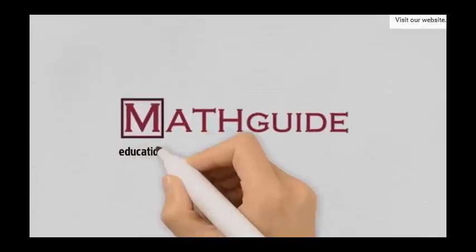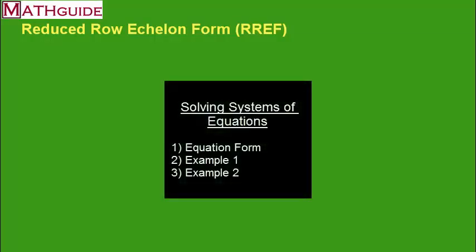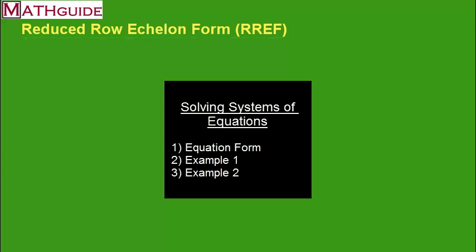This is MathGuide.com and my name is Mark Karadimos. In this video we're going to talk about how to solve a system of linear equations. The technique is called reduced row echelon form, or RREF for short. We're going to have three sections: the special form the equations have to be in, and then we're going to look at two examples.